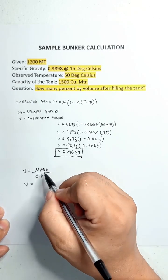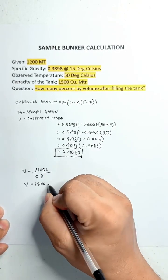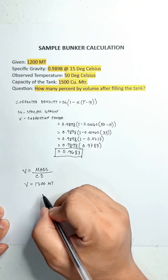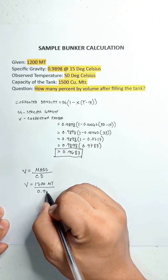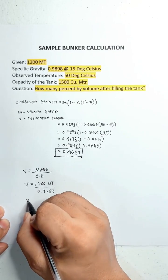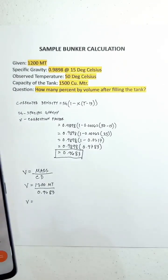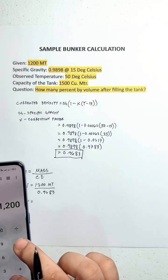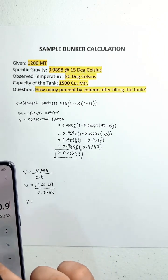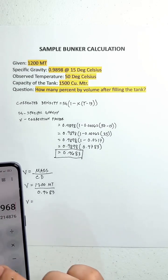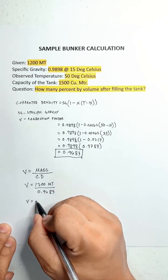Volume equals the mass of 1,200 metric tons all over 0.9683. The corrected volume equals 1,200 divided by 0.9683, which equals 1,239.29 cubic meters.